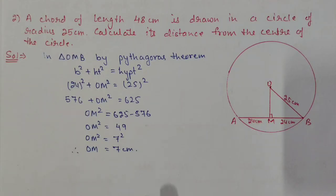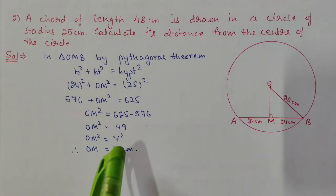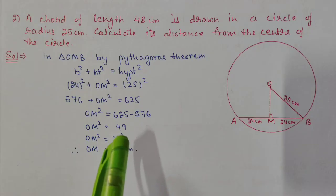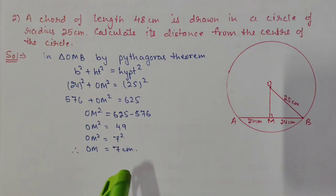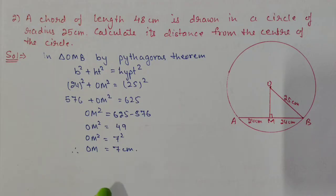After applying the Pythagorean theorem and calculating, OM² = 49, so OM = 7 cm. The distance from the center to the chord is 7 cm.